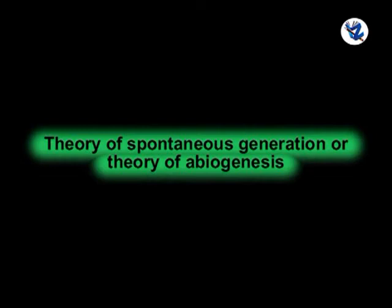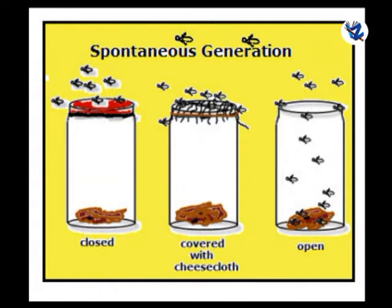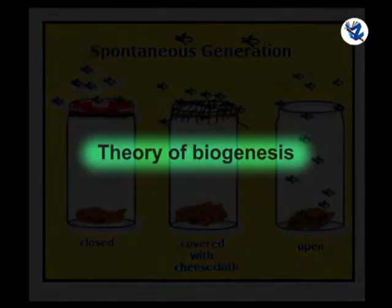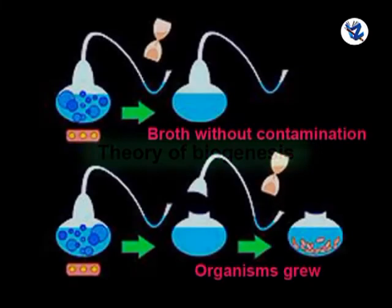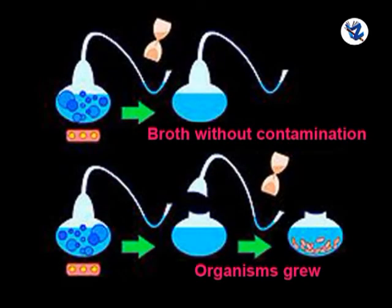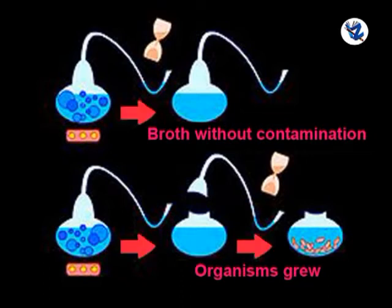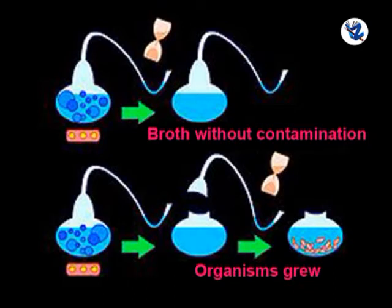Theory of Spontaneous Generation or Theory of Abiogenesis: According to this, life originated from non-living materials spontaneously without any interruption. Theory of Biogenesis: This theory could not explain the origin of the first life on Earth, but satisfactorily explains the continuity of life. According to biogenesis, living organisms are always produced from pre-existing living forms by reproduction and not from non-living or lifeless matter.